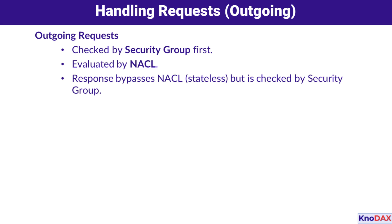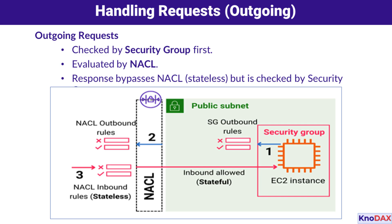The same process applies to outgoing requests, but in reverse. The request first hits the security group and then the NACL. It's this layered evaluation that ensures comprehensive control. Let's walk through how an outgoing request is handled step by step. In step one, the outgoing request starts at the EC2 instance and passes through the security group's outbound rules.